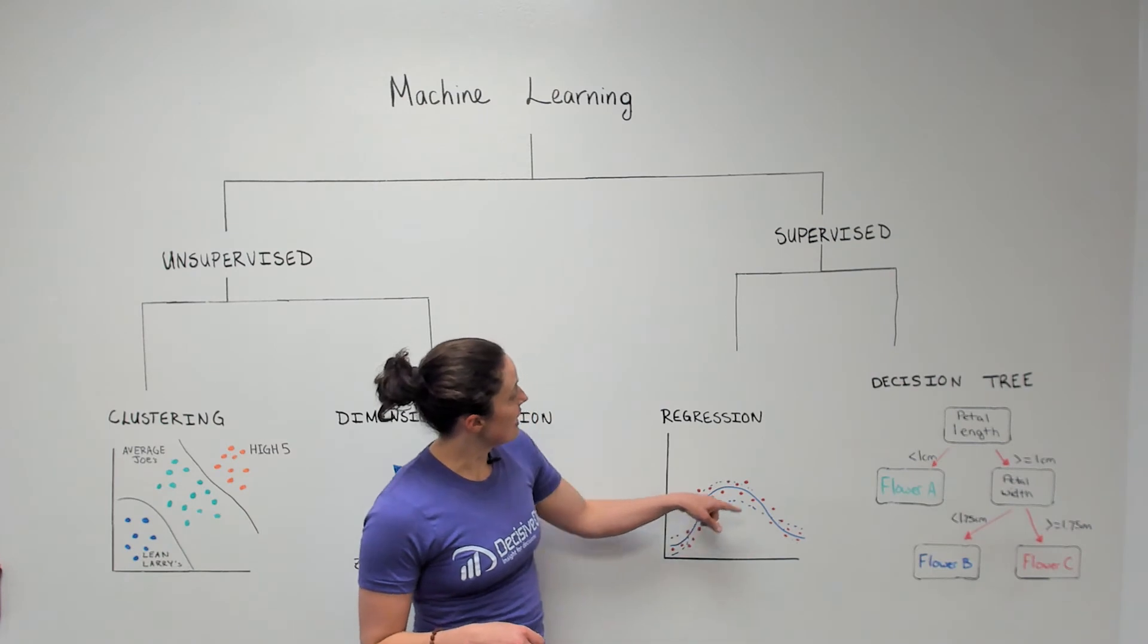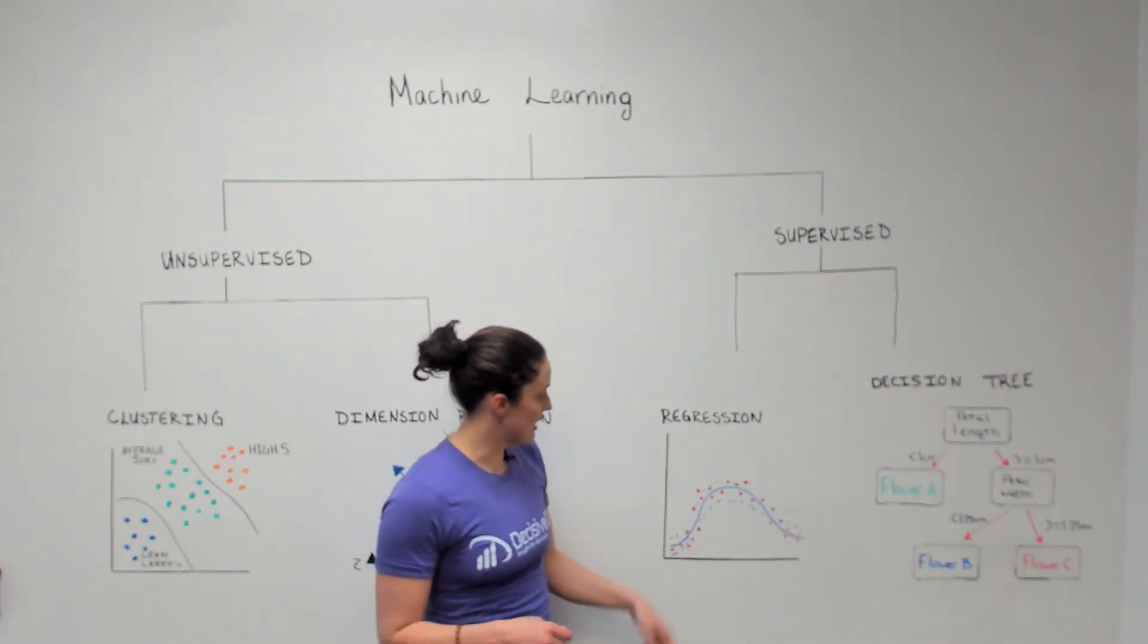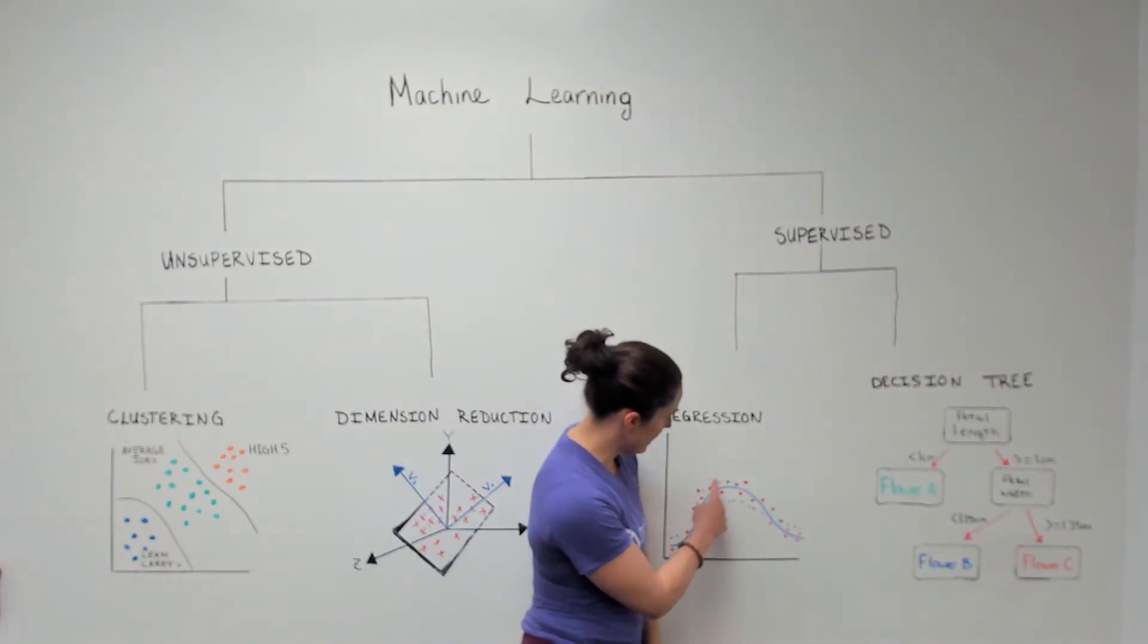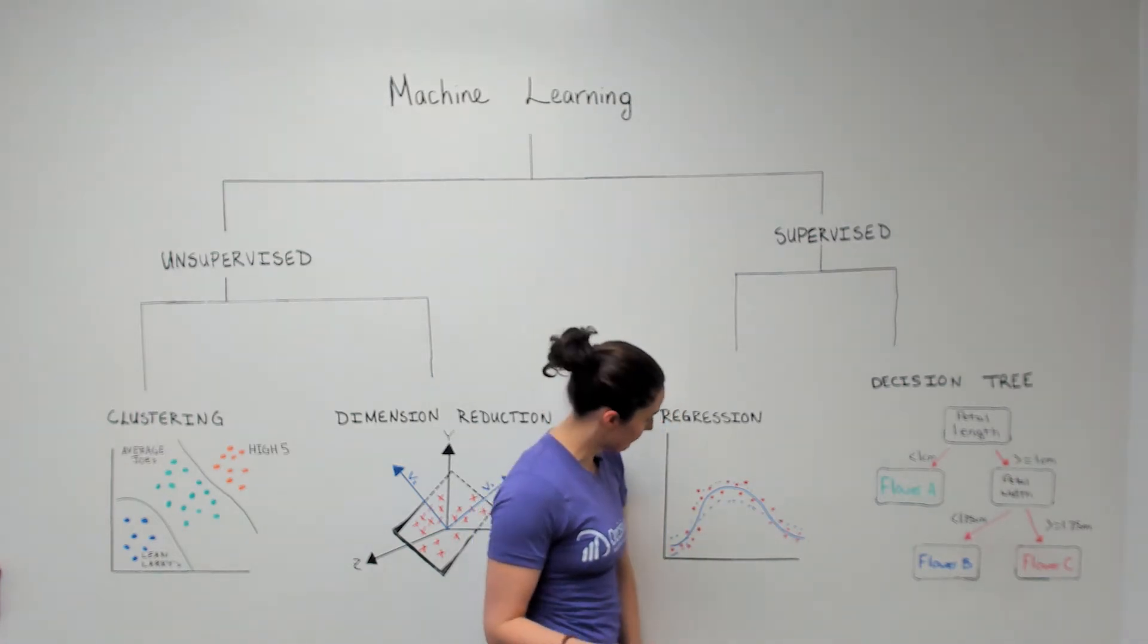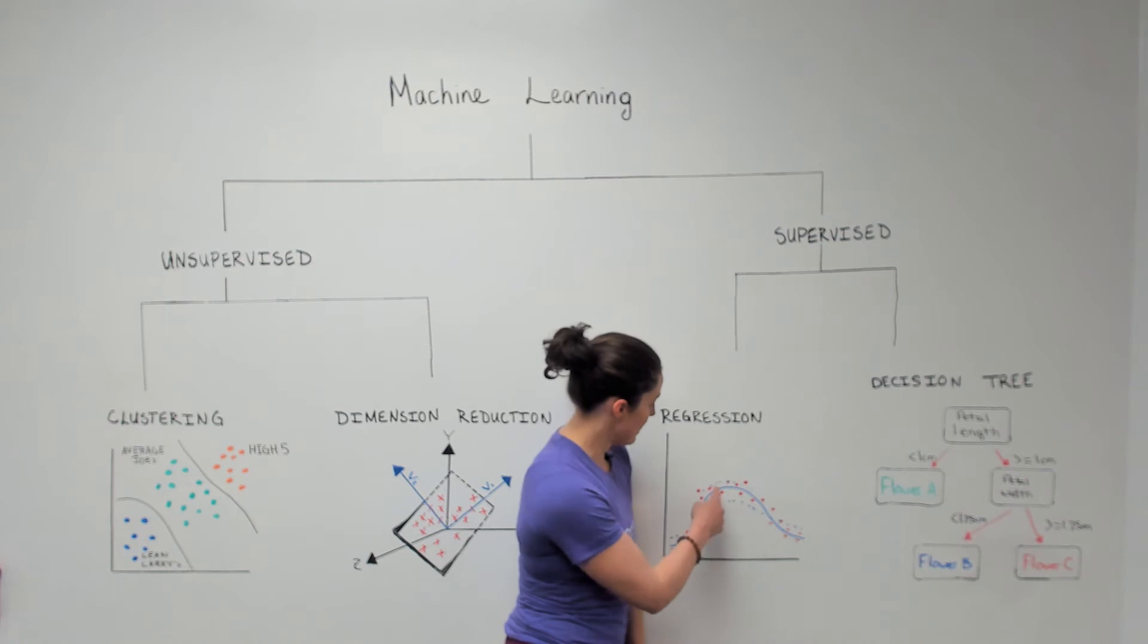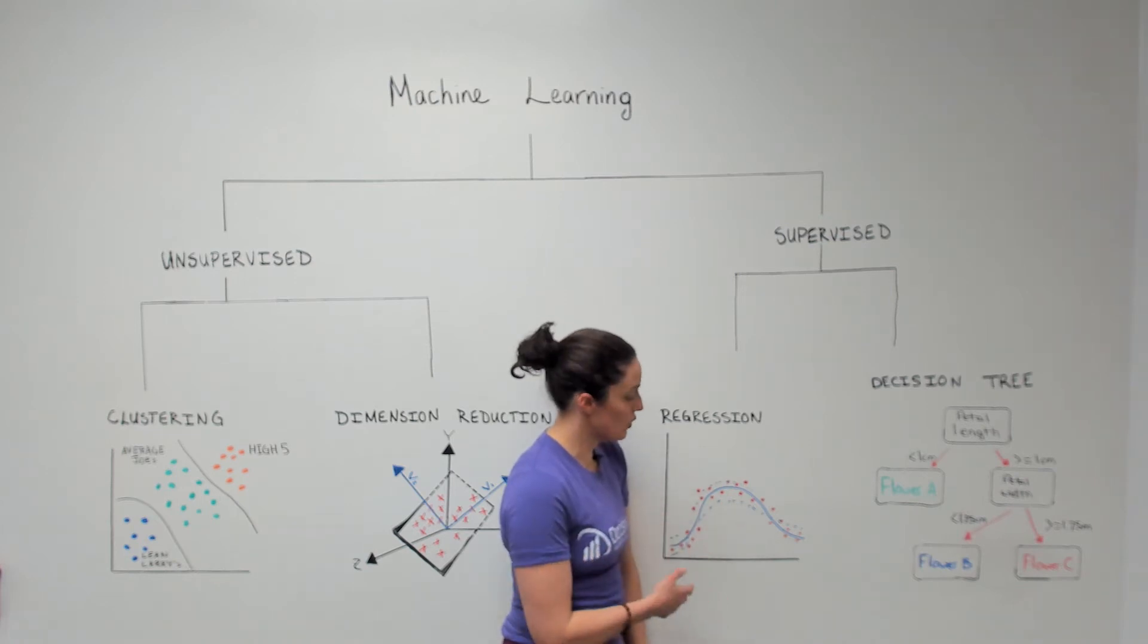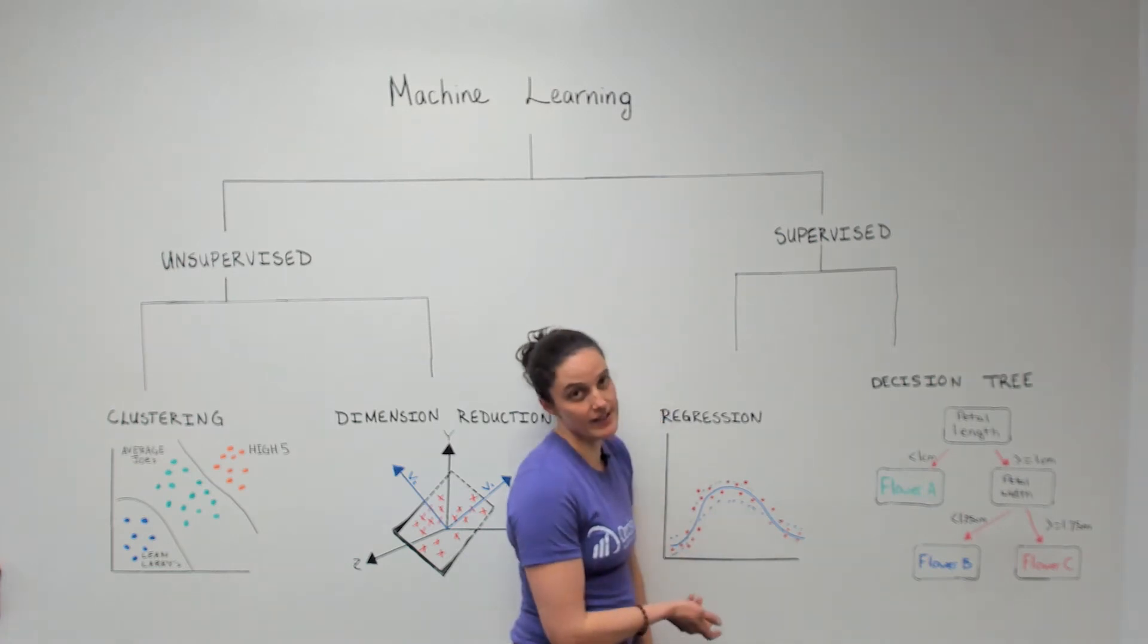The way that this works is it iterates, the way the machine learns this is it draws lines iteratively through these data points in hopes to best represent the data. It does this as many times as we tell it to and then eventually it gets to this line that is the optimum representation for this data.